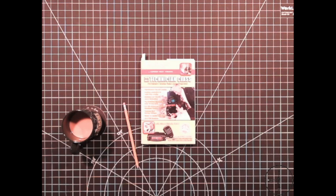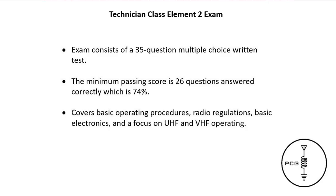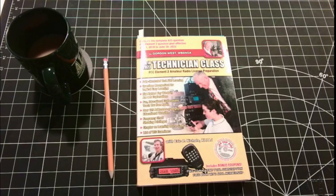The technician class license exam currently consists of a 35 question multiple choice written test. The minimum passing score is 26 questions answered correctly, which is 74 percent. You'll be tested on basic operating procedures, radio regulations, basic electronics, and a focus on UHF and VHF operation.